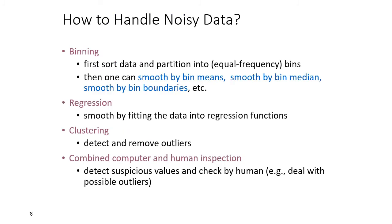How to handle noisy data? The first method is binning — sort the data and partition it into equal-frequency bins. We can then smooth the data by taking the mean or median of each bin, or by shifting values to bin boundaries. Another method is regression — generate a regression function equation for the data to smooth the fit. Clustering can also detect and remove outliers from the data.